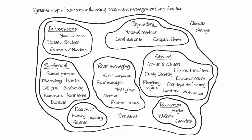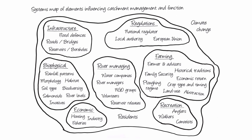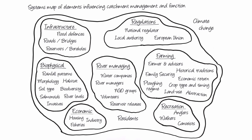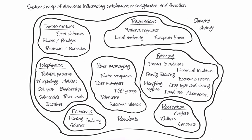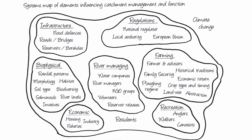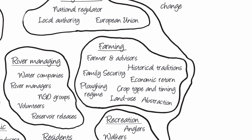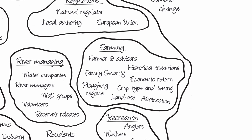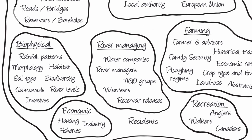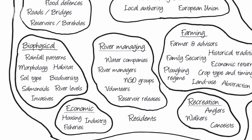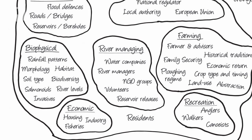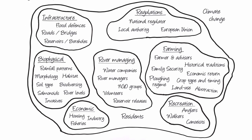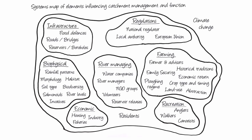Here is another example of a systems map. A systems map is a snapshot of a situation at a moment in time from the perspective of the person drawing it. This systems map is based on research into UK river catchments. It shows the elements that might influence how a water catchment is managed and functions. Some of these elements are grouped together within seven subsystems. For example, the farming subsystem includes the farmer, advisors, traditions of farming, family security, and economic returns — together these shape the kind of farming done in a catchment. The river managing subsystem includes elements such as water companies, residents, volunteers, and non-governmental organizations. I drew this map several times before settling on the themes in the subsystems. I'm still not entirely happy with it, as I think the residents element is not sufficiently developed and seems to be more an afterthought. My next iteration would be to explore more fully how residents shape the way catchments are managed and function.